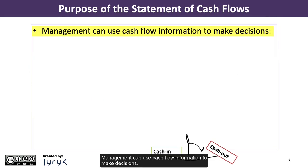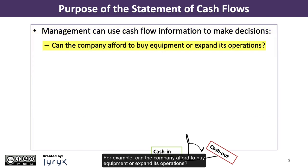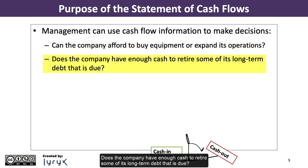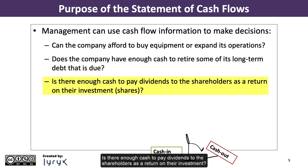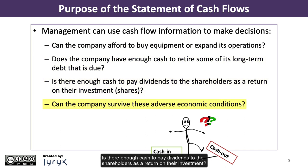Management can use cash flow information to make decisions. For example, can the company afford to buy equipment or expand its operations? Does the company have enough cash to retire some of its long-term debt that is due? Is there enough cash to pay dividends to the shareholders as a return on their investment? Can the company survive adverse economic conditions?